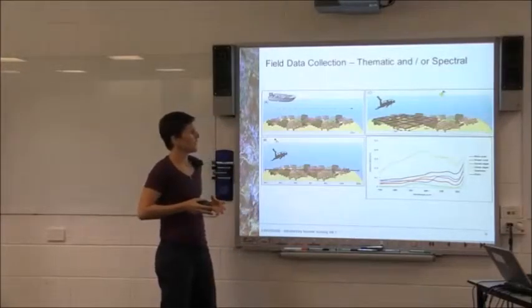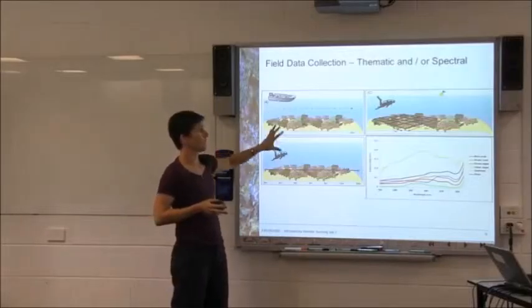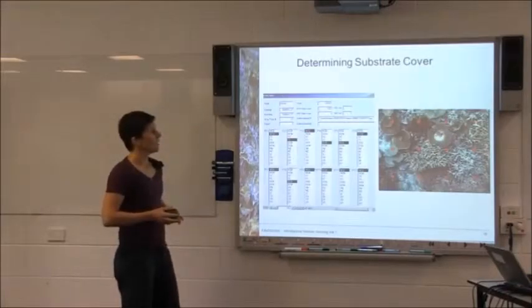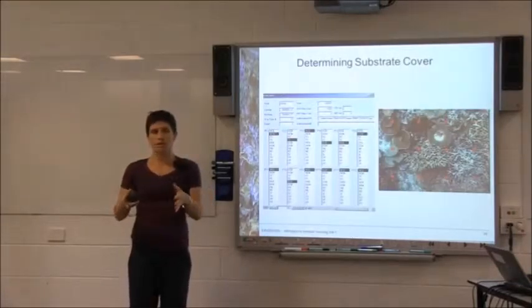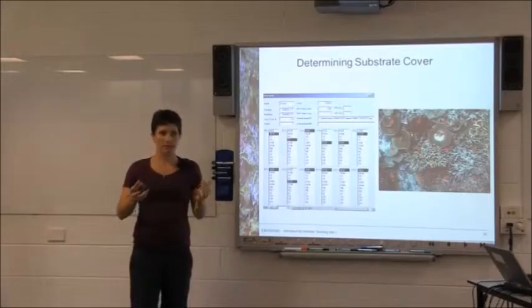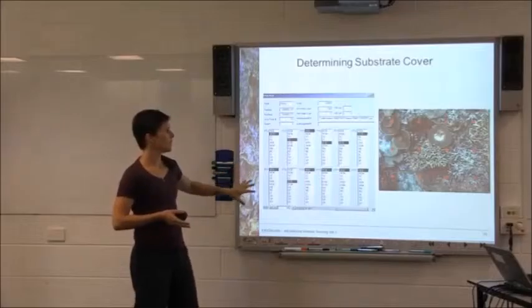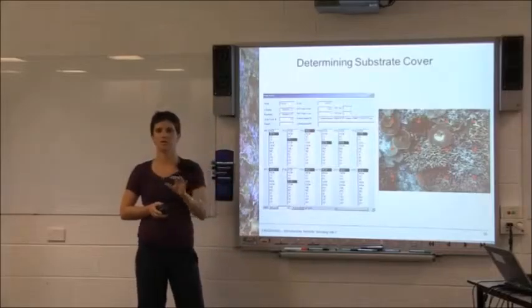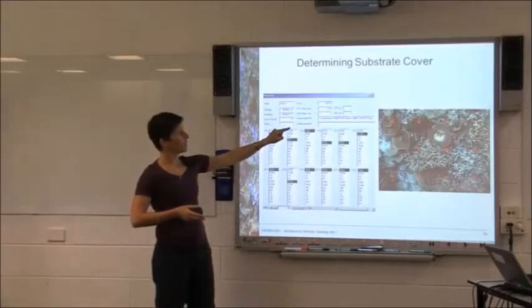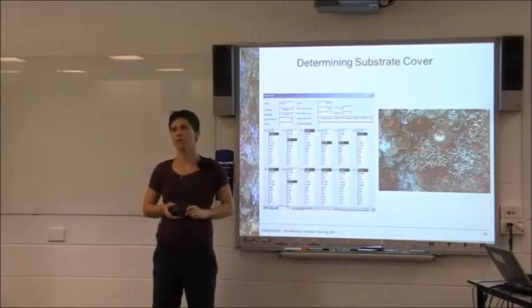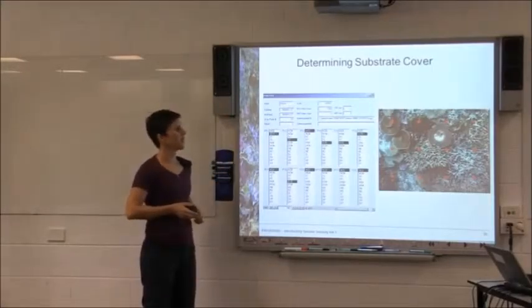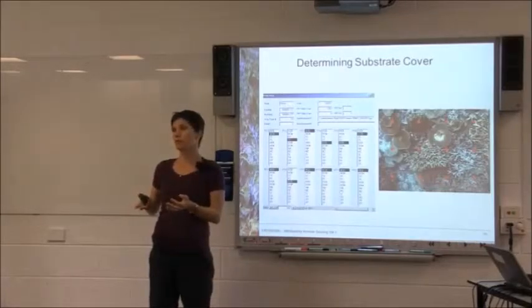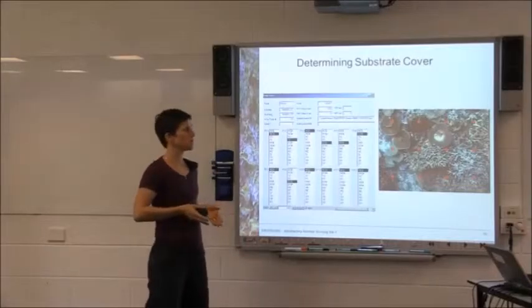What we're trying to get at is whether we can use any or all of these techniques together to map the live coral on the reef. Once we've taken all the photos, we bring them back in the evening, download them, and put points over each photo. In this example there are 12 points over the photo, and all we do is figure out exactly what was under each point and enter that into a database. For every single photo we then have a reference for what the percentage of coral was at that particular site, based on the GPS location.